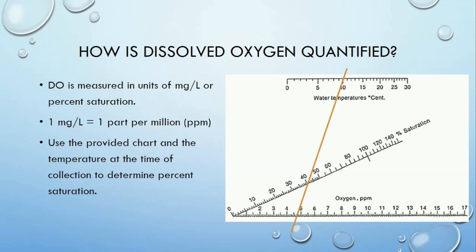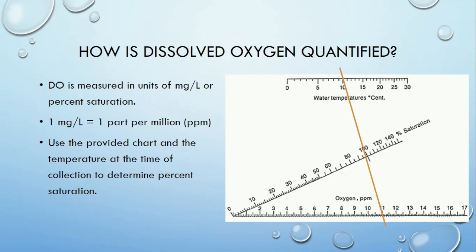Now it's your turn. Find the percent saturation of dissolved oxygen when the temperature is 10 degrees Celsius and the oxygen amount is 11 milligrams per liter. When we draw the line, we find the water is just under 100% saturated.